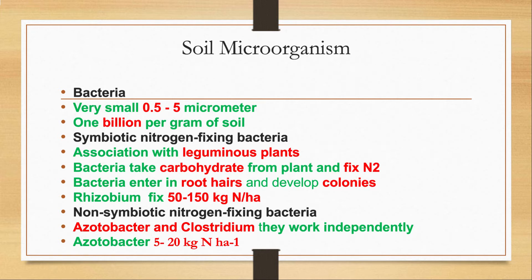Bacteria fix atmospheric nitrogen into plant-available form. In the atmosphere, 78% nitrogen is present in elemental form, which is not plant-available. Plants are unable to take up elemental nitrogen, so microbes fix elemental nitrogen into plant-available form.